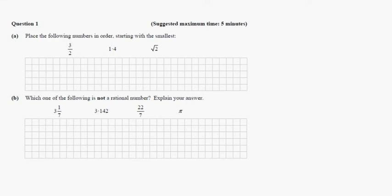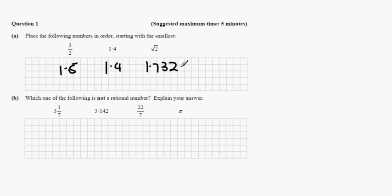Place the following numbers in order. Put 3 over 2 into the calculator and you get 1.5. Put 1.4 into the calculator and you get 1.4. Put root 2 into the calculator and you get 1.732. Arrange them in order of size.